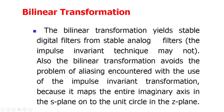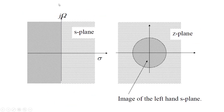The bilinear transformation maps the entire imaginary axis in the s-plane onto the unit circle in the z-plane. Let me explain this point: the complete j-omega axis, that is the imaginary axis from minus infinity to infinity, will be mapped inside the unit circle in the bilinear transformation technique.